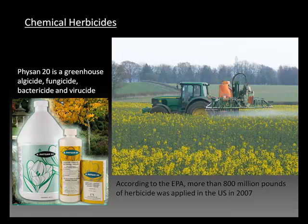There are also chemical herbicides. One used in our greenhouse is PhySan 20, commonly used to kill algae, fungi, bacteria, and viruses. Out in farm culture and natural areas, more widespread use of chemical herbicides is employed to control weeds and invasive plants — according to the EPA, more than 800 million pounds of herbicide was used in the US in 2007. For plant propagation purposes, we're going to try to minimize the amount of herbicide we use.